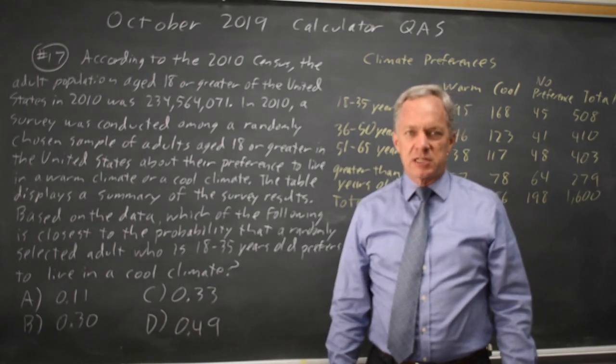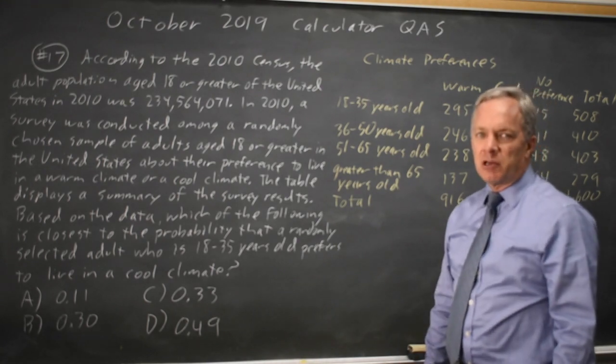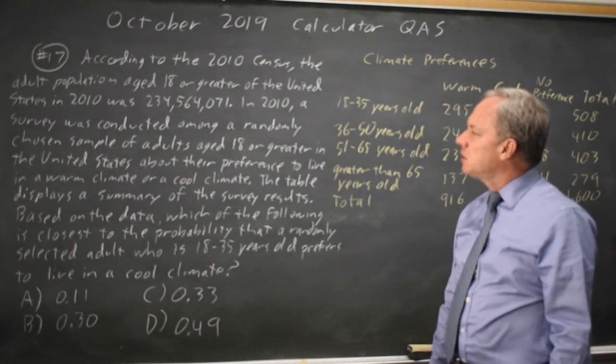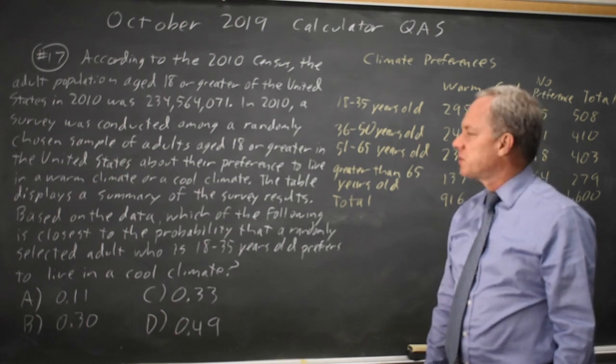This is question 17. College Board asks a very long, perhaps unnecessarily long, question about probability from a table, but you actually have to read the whole question to make sure you're not missing anything important.